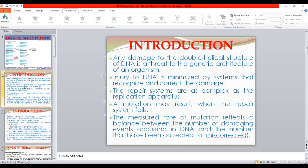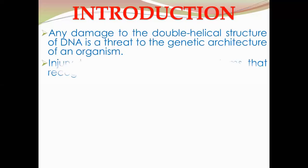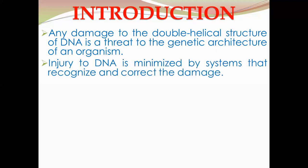Any damage to the double helical structure of DNA is a threat to the genetic architecture of an organism. If the double helical structure of DNA is damaged, this is a threat for the normal development and survival of an organism. So in every organism, there exist different systems which try to repair this damage. These systems, commonly known as DNA repair systems, minimize the injury or damage caused to the DNA.